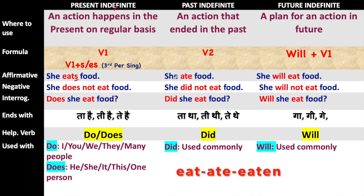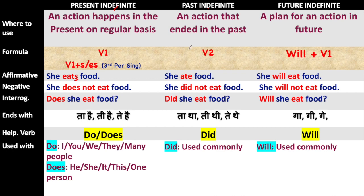If S or ES is added, or nothing is added, then it is present indefinite tense. If the second form of verb is used, then it is past indefinite tense. The helping verbs of present indefinite tense are 'do' and 'does,' and 'did' is the helping verb of past indefinite tense.